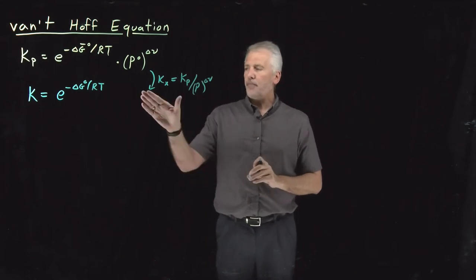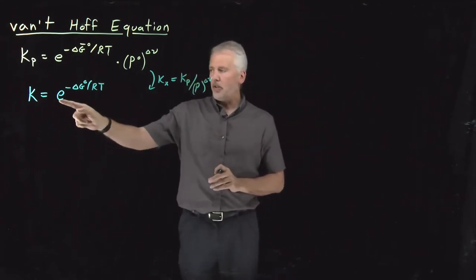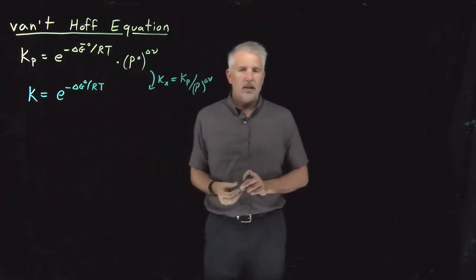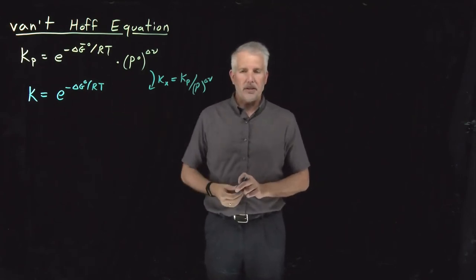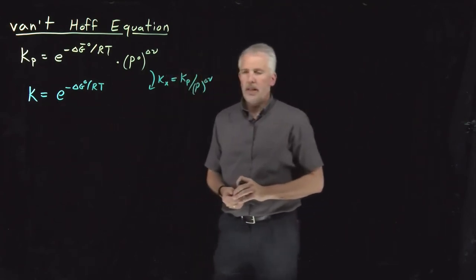By whichever way we want to think about it, this K, whether it's a K X or KN or something, is either e to the minus delta G over RT, or it's e to the minus delta G over RT times some multiplicative constant. So if we use this unitless equilibrium constant, we're going to be interested in temperature dependence of this quantity.